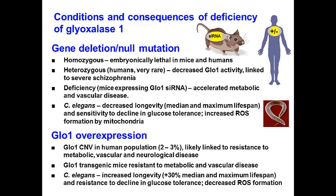Glyoxalase 1 transgenic mice are resistant to metabolic and vascular disease, and overexpression of glyoxalase 1 in C. elegans produced increased lifespan — maximum and median lifespan increased 30% — with resistance to declining glucose tolerance and decreased reactive oxygen species. So there seems to be a great health benefit if we can increase glyoxalase 1 expression.